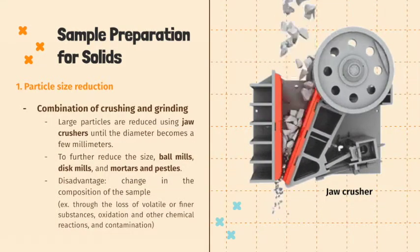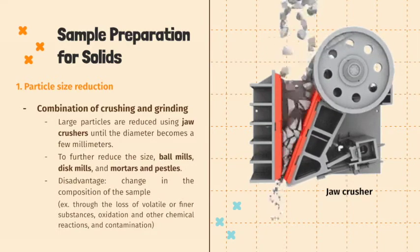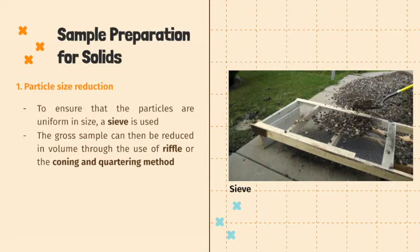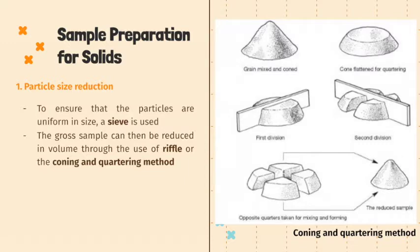Particle size can be reduced by crushing and grinding the sample. For large particles, jaw crushers are first used. Then, to further reduce the size, ball mills, disc mills, and mortar and pestles are used. A drawback is that this procedure could significantly change the composition of the sample due to loss of volatile or finer substances, oxidation, and contamination. After crushing and grinding, a sieve is used to ensure particles are uniform in size. The gross sample can then be reduced in volume using a riffle.